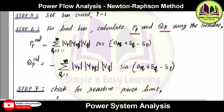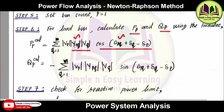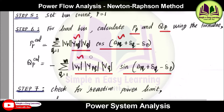Pp_calculated = summation (q=1 to n) of Vp * |Ypq| * Vq * cos(theta_pq + delta_q - delta_p), where theta_pq is the angle of Ypq obtained from the Y-bus matrix. Similarly, Qp_calculated = -summation (q=1 to n) of Vp * |Ypq| * Vq * sin(theta_pq + delta_q - delta_p). The first three terms are magnitudes and the last term is the angle.